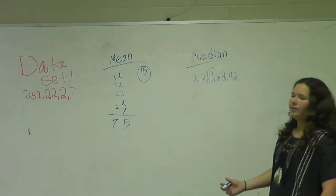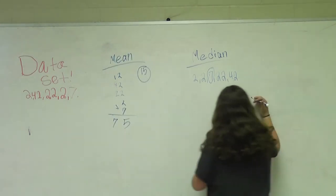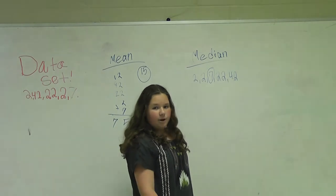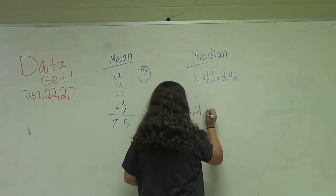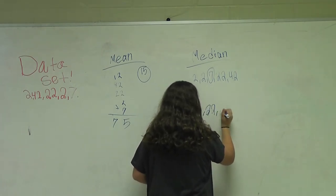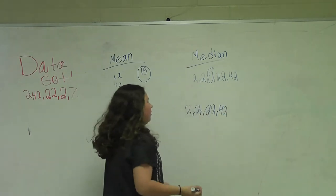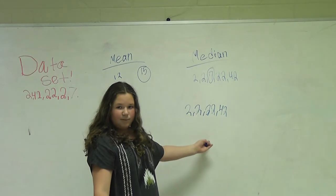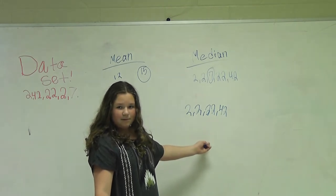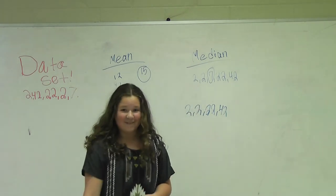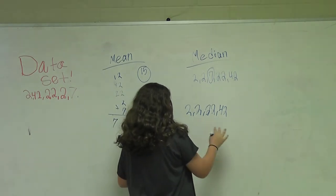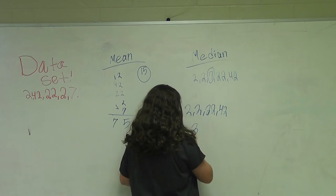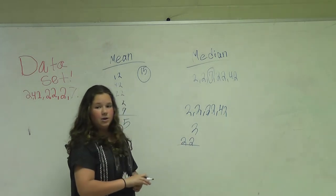But if you had 4 numbers, there wouldn't be a middle number. So what you would have to do is say there was no 7. It would just be 2, 2, 22, and 42. So what you do is you take the two biggest numbers. I mean the ones in the middle. Oh, sorry. So 2 and 22 is our numbers in the middle. You take those.